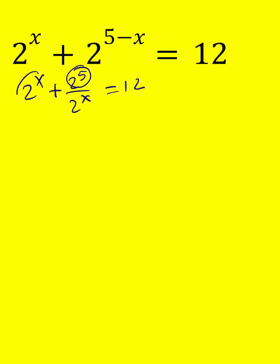Now, this is 32, and let's call this something, how about t? We have t plus 32 over t equals 12. At this point, feel free to guess and check your work.